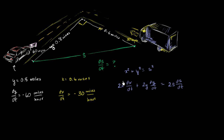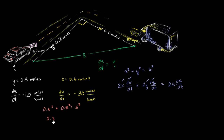Now we know x, dx/dt, y, and dy/dt. All we need is s and ds/dt. We can find s right now using the Pythagorean theorem: x squared is 0.6 squared, y squared is 0.8 squared, so 0.36 plus 0.64 equals s squared. That gives us 1 equals s squared, and since we only care about positive distances, s equals 1 mile right now. So let's substitute all of these numbers in and solve for ds/dt.